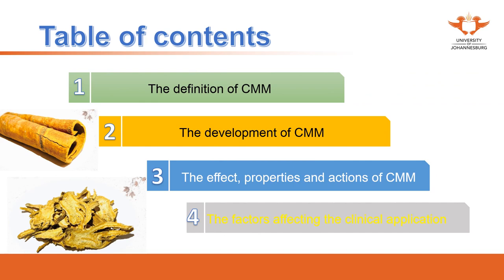In this general introduction, we are going to focus on four aspects: the definition of Chinese Materia Medica, the development of Chinese Materia Medica, the effects, properties and options of herbal medicine, and the factors affecting clinical applications. The second aspect — the development of herbal medicine — has actually already been introduced in the history of Chinese medicine at the beginning of this year, so it will be a revision.